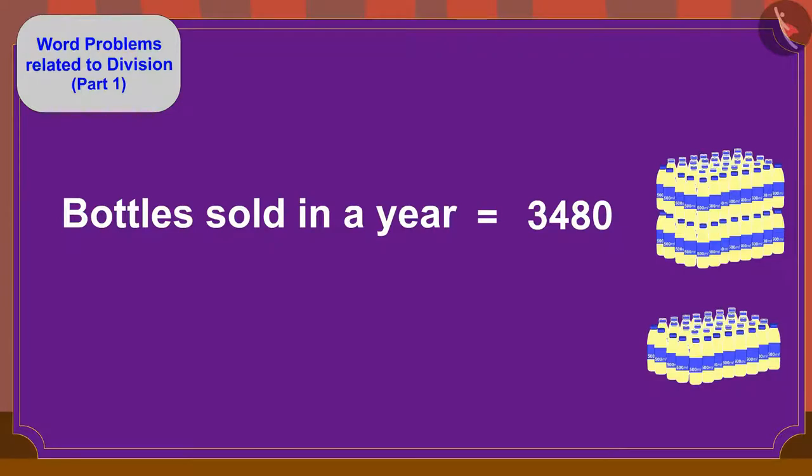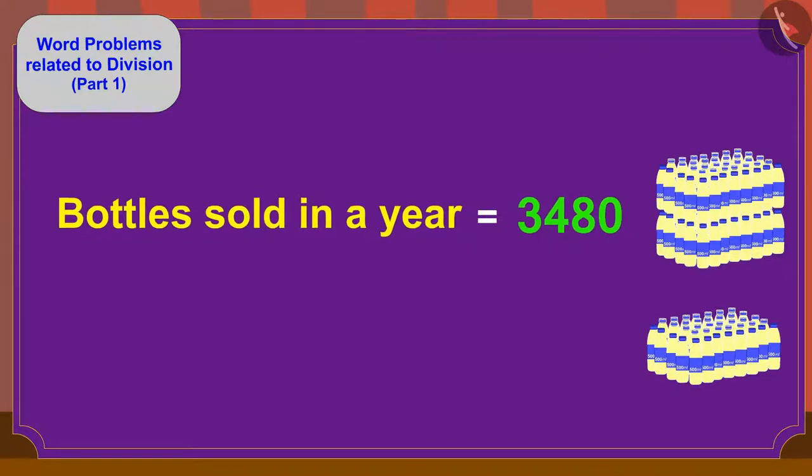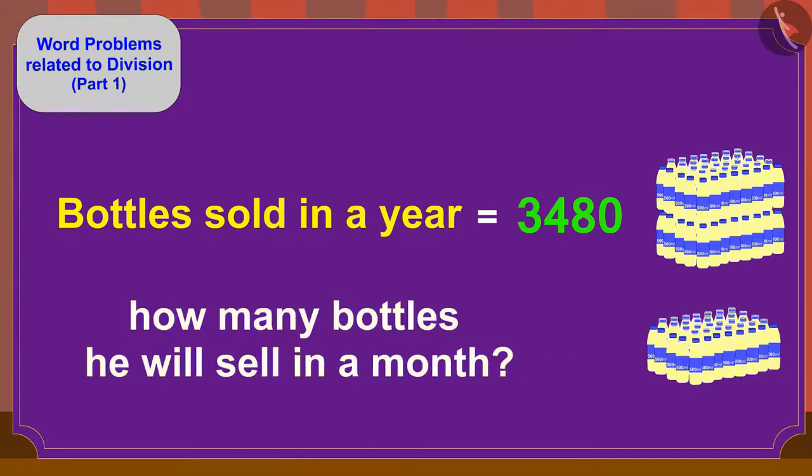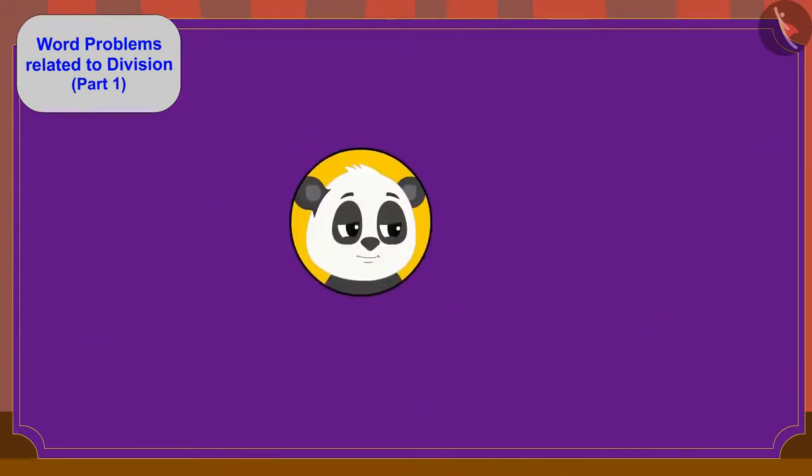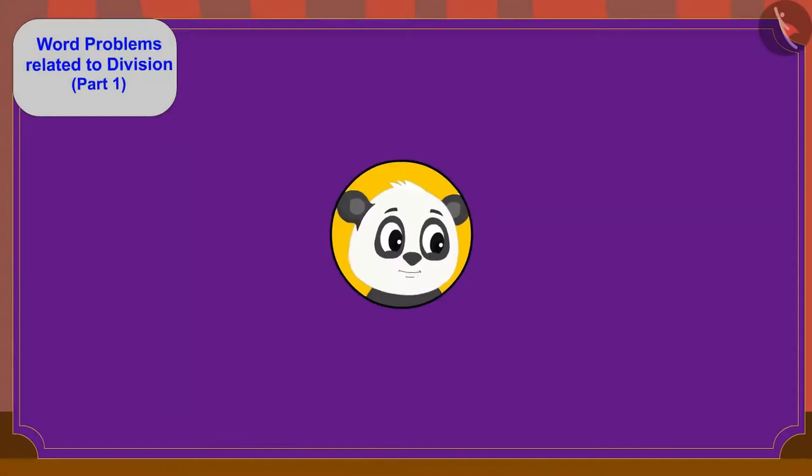If Golu sells 3480 masala milk bottles in a year, what process will we have to use to find out how many bottles he will sell in a month? That's correct. Process of division. Let us solve it together.